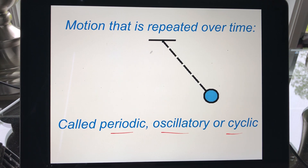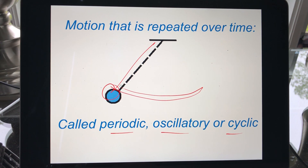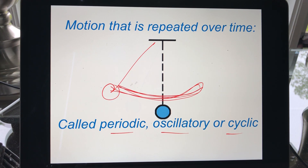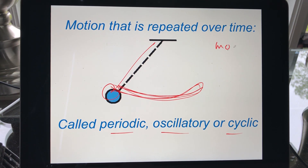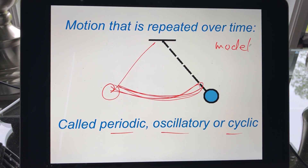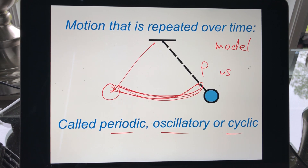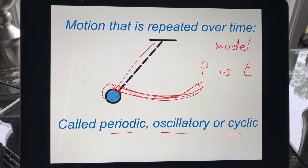Imagine pulling a pendulum over to the side and letting it go — it just goes back and forth and back and forth, repeating itself. This is the type of situation we can model. We're going to write an equation or a model to describe the position of this pendulum as a function of time. Those are the two variables we're going to link together.